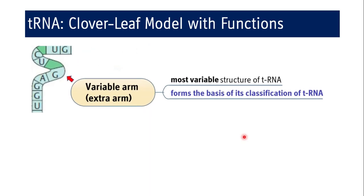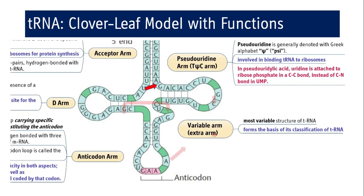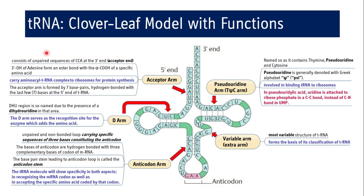The variable arm, or extra arm, is a very short arm but forms the basis of classification of tRNA molecules. The number of nucleotide bases differs in the variable arm across different tRNAs for specific amino acids, and this variability forms the basis of tRNA classification. The secondary structure of tRNA — the cloverleaf model with all its arms and functions — can be reviewed in the summary slide.